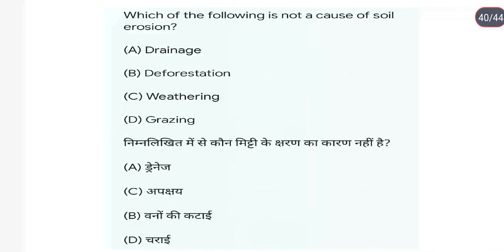Which is not a cause of soil erosion? Weathering soil erosion का कारण नहीं है। बाकी drainage, deforestation (वनों की कटाई), और overgrazing (चराई) — यह सब soil erosion के कारण होते हैं।